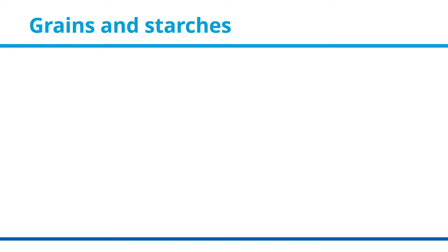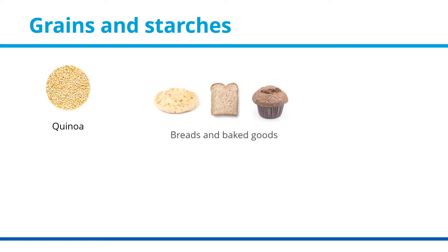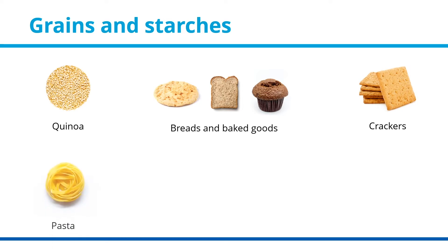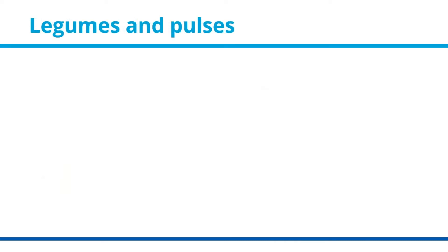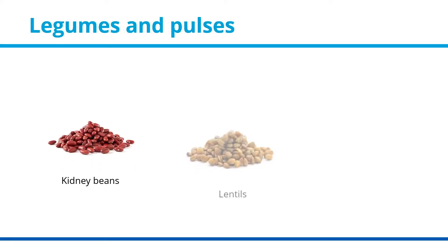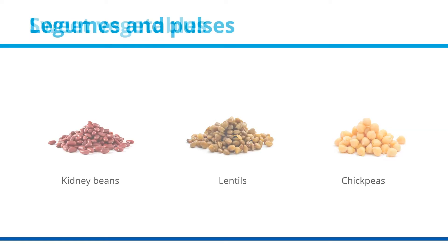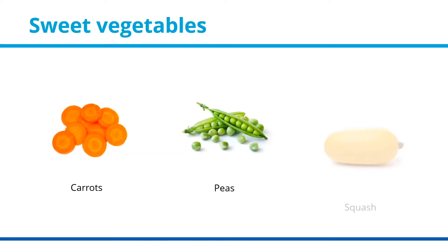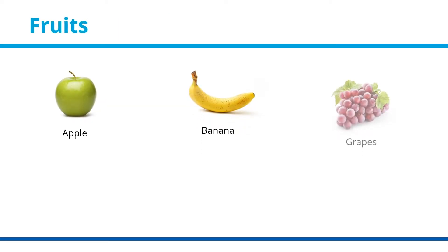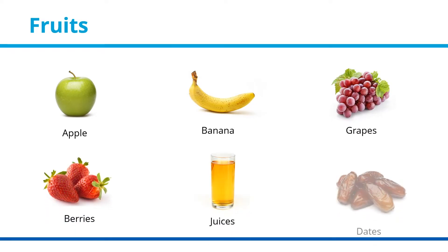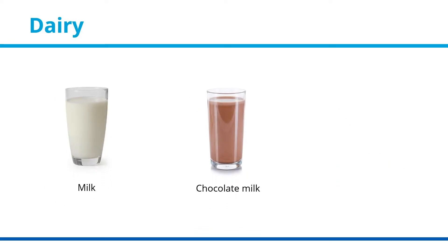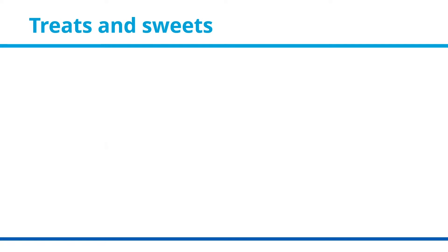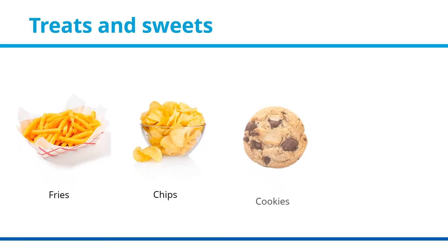Carbohydrate foods include all grains and starchy foods such as quinoa, breads and baked goods, crackers, pasta, rice, potatoes, and cereals. Legumes and pulses like kidney beans, lentils, and chickpeas. Sweet vegetables like carrots, peas, and squash. All fruits and berries such as apples, bananas, grapes, strawberries, and juiced or dried fruits. Some dairy products like milk, chocolate milk, and yogurt. And treats and sweets such as fries, chips, cookies, and syrup.